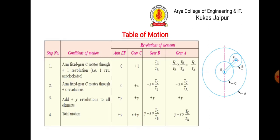In the table, arm is fixed and gear c (the sun gear) rotates through plus one revolution. So: arm = 0, gear c = +1, gear b = minus tc by tb (clockwise, hence minus sign). For gear a it will be minus tc by tb multiplied by tb by ta, which equals minus tc by ta. For the second row multiply by x, for the third row add plus y, and the fourth row is the sum of rows two and three.